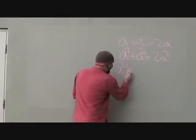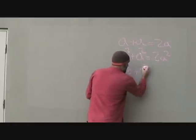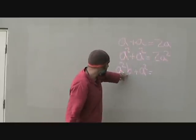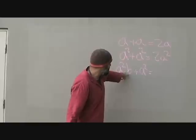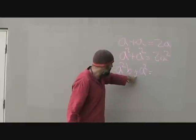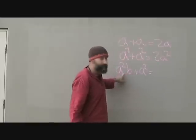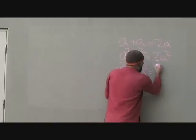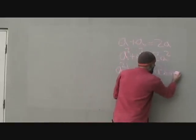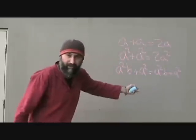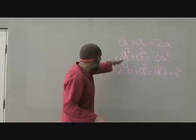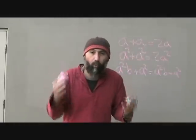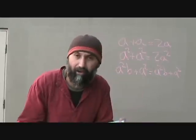If I gave you something like a squared times b plus a squared, you couldn't add these because those two things are multiplying together — the multiplication supersedes the addition. So the answer would just remain a squared b plus a squared. It doesn't reduce. When you're adding or subtracting, the terms have to be identical.